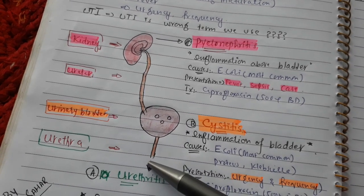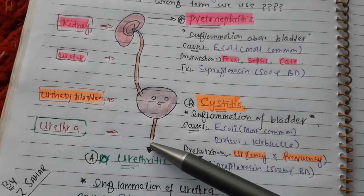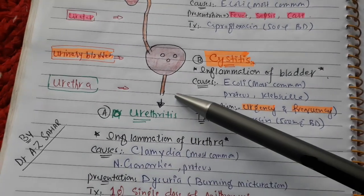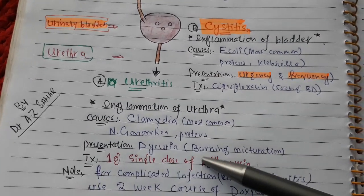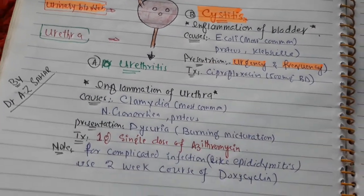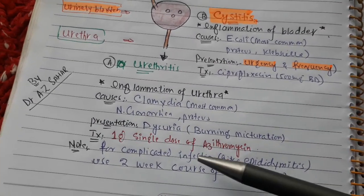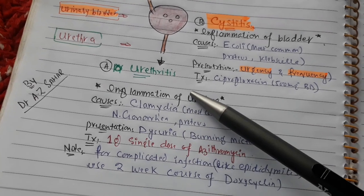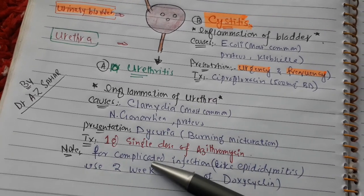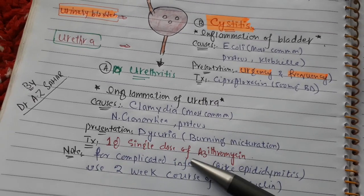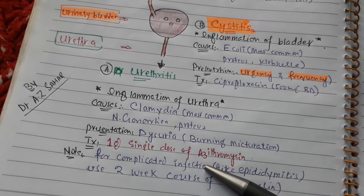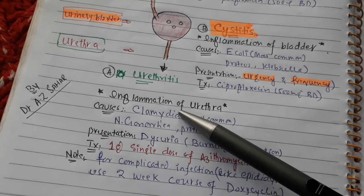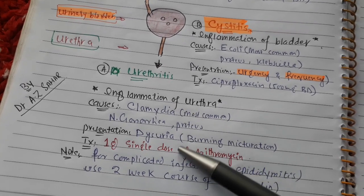Inflammation of the urethra is called urethritis, and the most common cause for urethritis is Chlamydia. It can also be caused by Neisseria gonorrhoeae or Proteus. The treatment for urethritis is a 1 gram single dose of azithromycin, and if we also suspect Neisseria gonorrhoeae, we will give ceftriaxone.